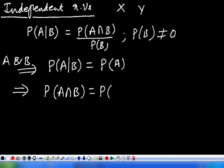If the occurrence of event A does not depend on B, then the conditional probability of A given B is equal to the probability of A. That is, if B and A are independent, or if the occurrence of event A does not depend on the occurrence of event B, then they are said to be independent events. Therefore the probability of A intersection B is equivalent to the probability of A into the probability of B. This is the general definition of the statistical independence of the two events.